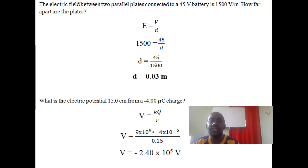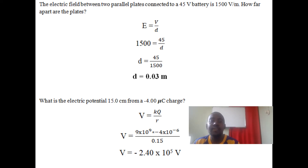Next question: what is the electric potential at 15 centimeters from a negative 4 microcoulomb charge? We keep the sign of the charge. k is 9 times 10 to the 9, q is negative 4 times 10 to the negative 6, and the distance is 15 centimeters, which is 0.15 meters. We get an electric potential of negative 2.40 times 10 to the 5 volts.